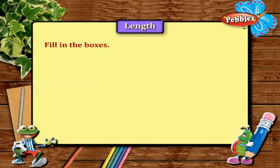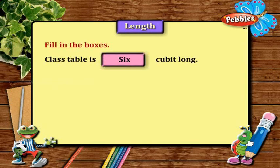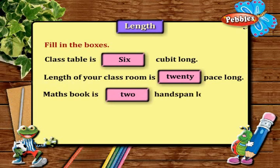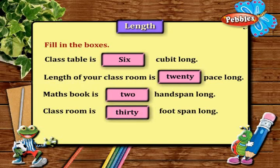Let us fill in the boxes. The class table is 6 cubits long. The length of your classroom is 20 paces long. The maths book is 2 hand spans long. The classroom is 30 foot spans long.